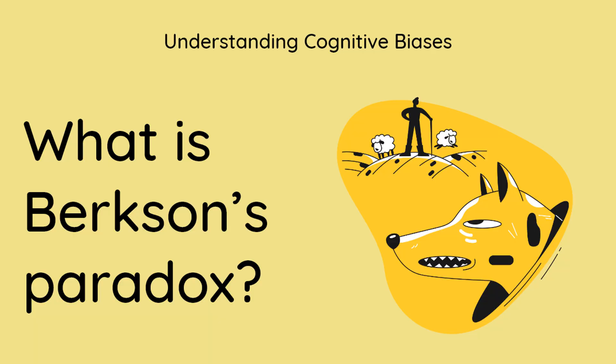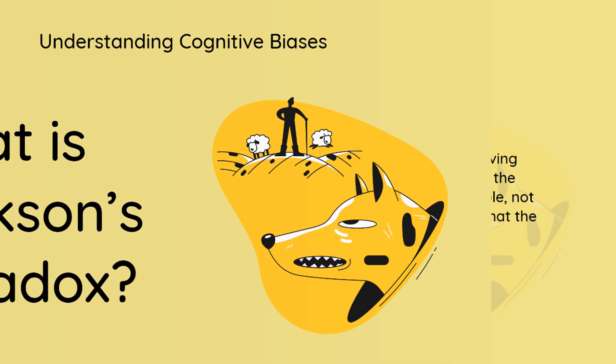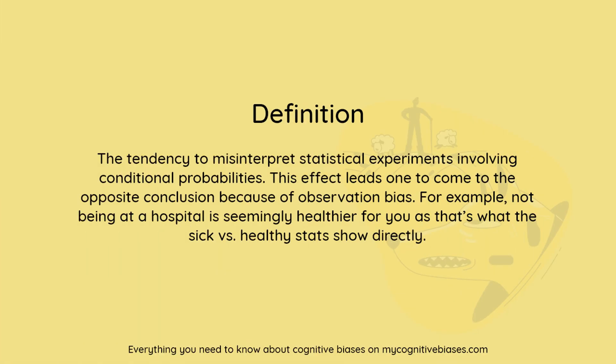What is Berkson's paradox? Definition: the tendency to misinterpret statistical experiments involving conditional probabilities. This effect leads one to come to the opposite conclusion because of observation bias.